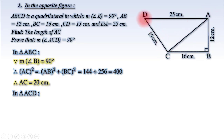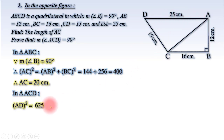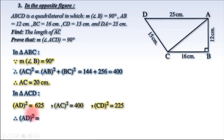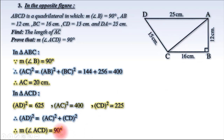So the length of AC power 2 is 400. Then CD power 2 equals 225. So 400 plus 225 equals 625. Since AD power 2 equals AC power 2 plus CD power 2, therefore the measure of angle ACD equals 90 degrees.